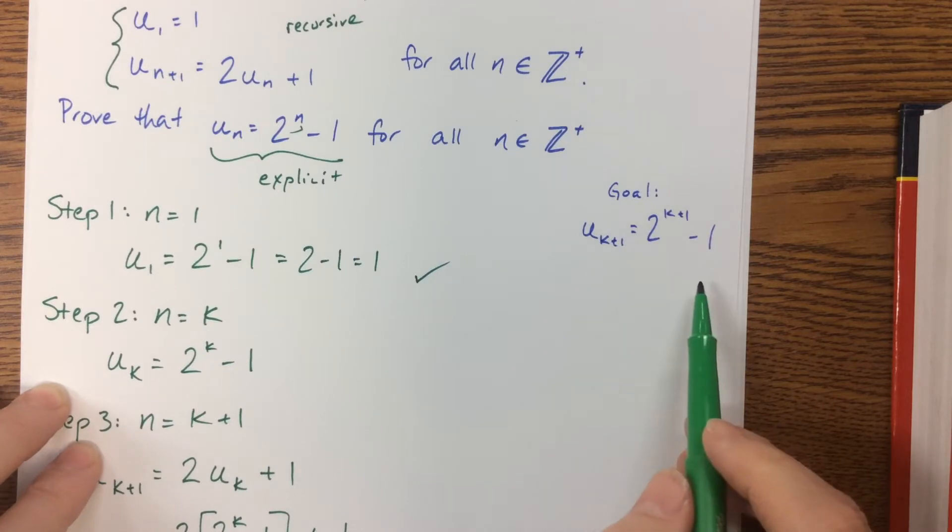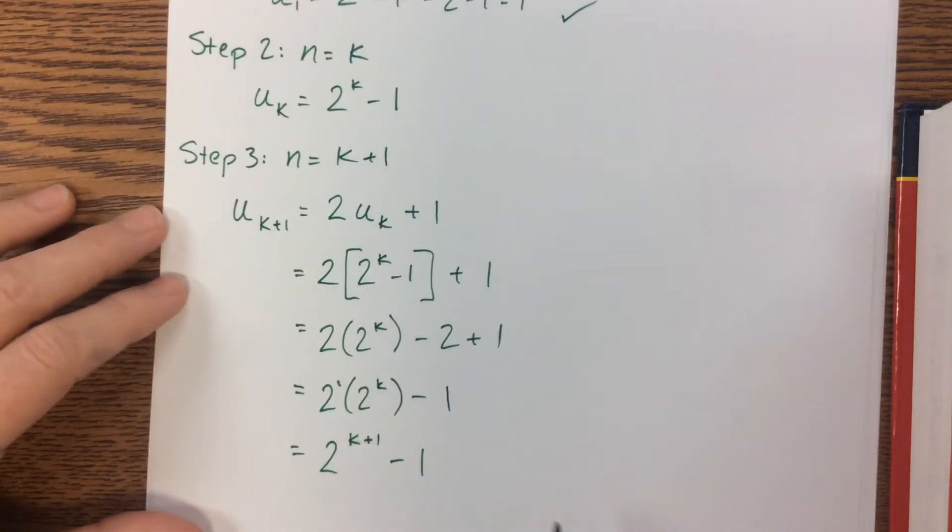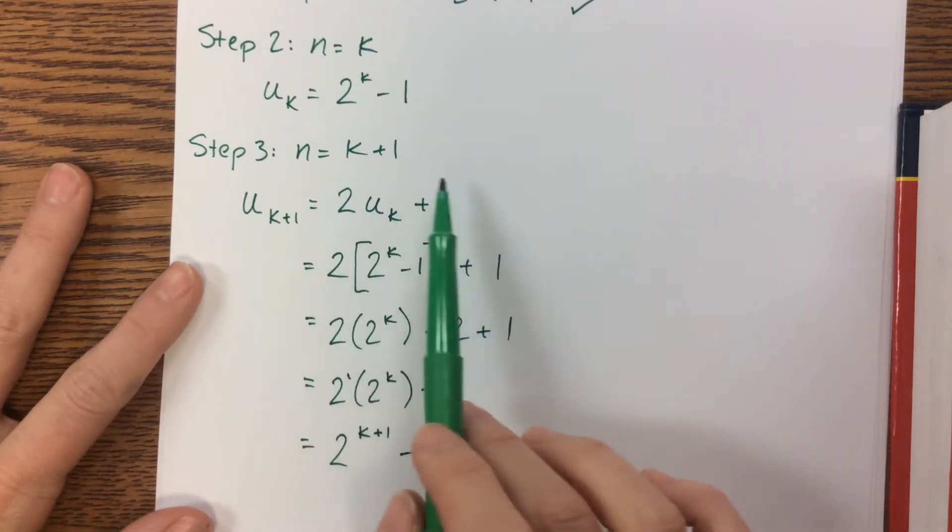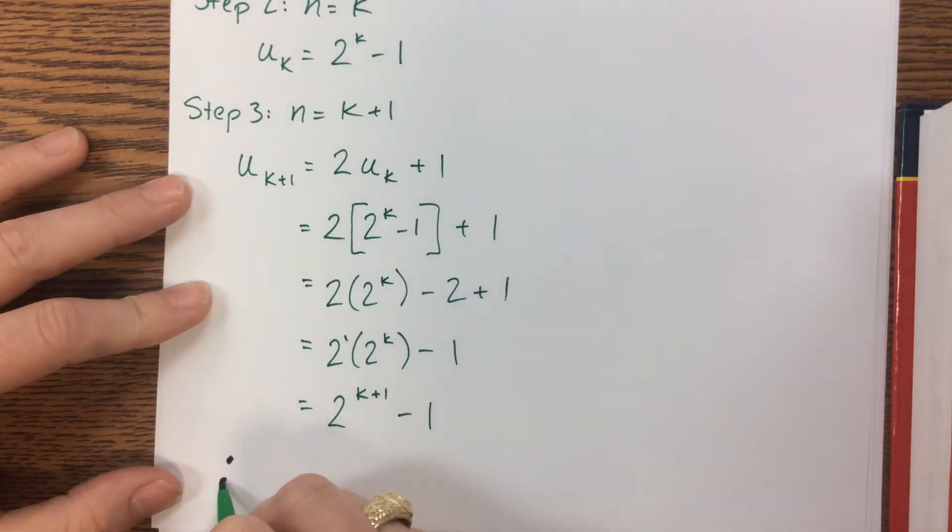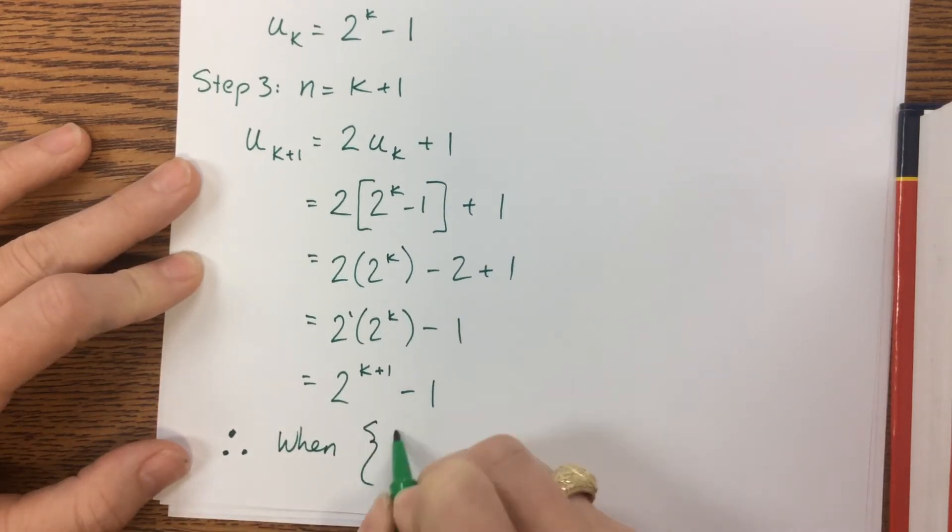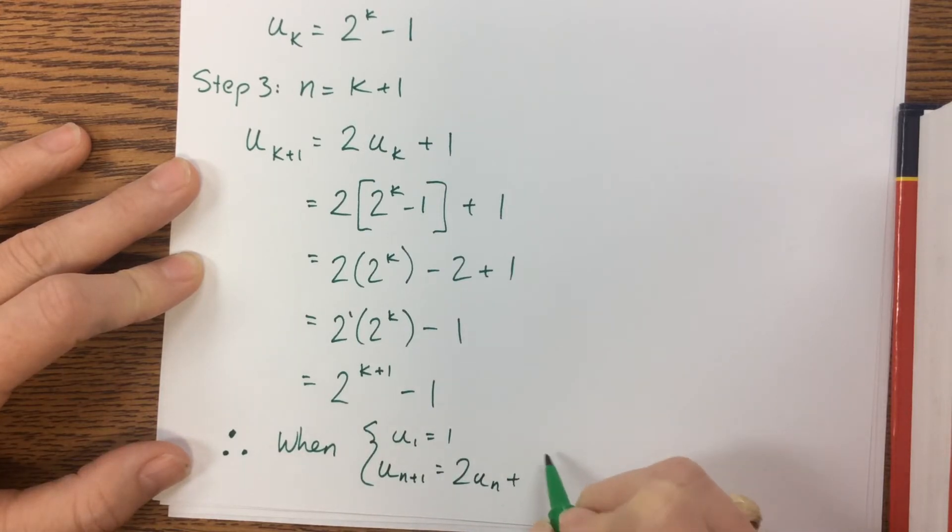You may notice that was my goal. So what we have done is manipulated the recursive formula until we got down to the explicit formula. Therefore, when u_1 = 1 and u_(n+1) = 2u_n + 1...